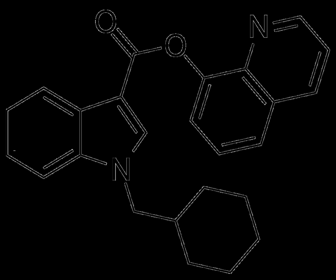QUCHIC is a designer drug offered by online vendors as a cannabimimetic agent, and was first detected being sold in synthetic cannabis products in Japan in early 2013, and subsequently also in New Zealand. The structure of QUCHIC appears to use an understanding of structure-activity relationships within the indole class of cannabimimetics, although its design origins are unclear.